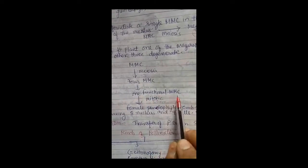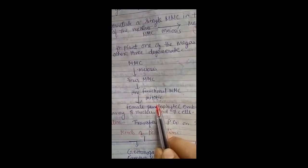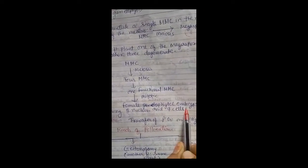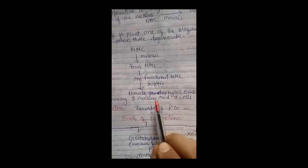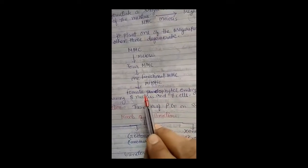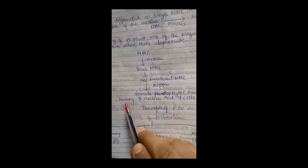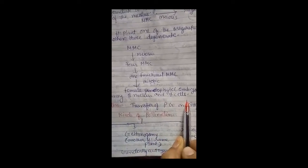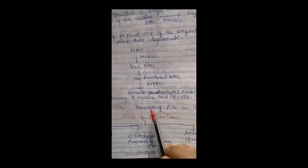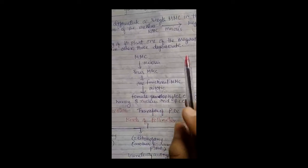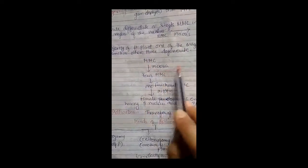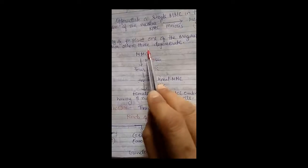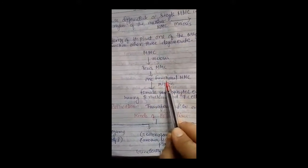This one functional megaspore undergoes meiotic division to form a female gametophyte, or embryo sac, in angiospermic flowers. This embryo sac or female gametophyte is in an 8-nucleus and 7-cell stage. This is all about megasporogenesis — the formation of megaspores from the megaspore mother cell.